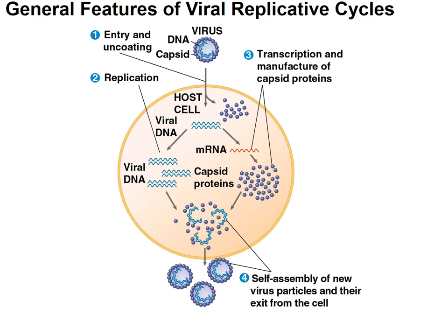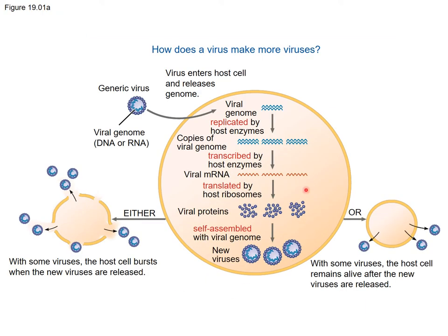Looking more closely at viral replication: we have a generic virus whose genome can be DNA or RNA. The viral genome is replicated by the host enzymes — the host enzymes are used by the virus to make more viral particles. The DNA is transcribed into viral messenger RNA, which is then translated into proteins, and then the viral particles are produced.